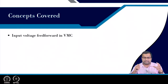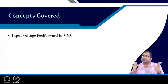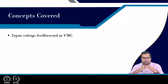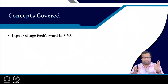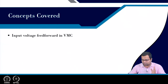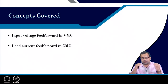We have so far discussed feed forward control without feedback in lecture 14, and single loop and two loop control in lecture 15. So we are familiar with voltage mode control, which is a single loop control, and also with input voltage feed forward. In this lecture, we will consider combined load and input voltage feed forward in voltage mode control, and also load current feed forward in current mode control.